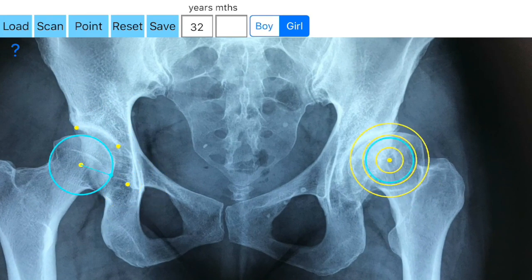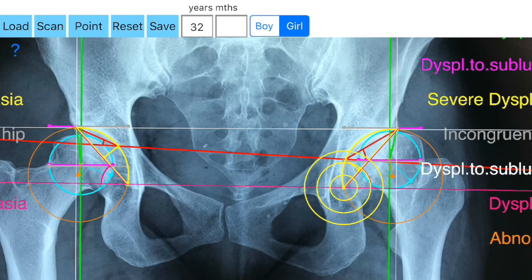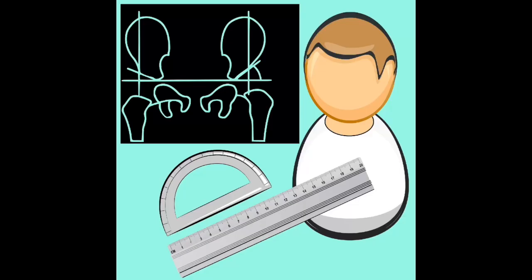Protractors and sharp pencils are now obsolete for measuring patient x-rays. Throw the protractors and rulers in the textbook away — forget cumbersome measurements. With just a few clicks on your screen, you have results with suggested diagnosis on your iPhone or iPad.